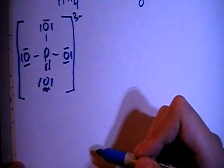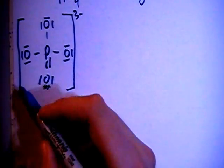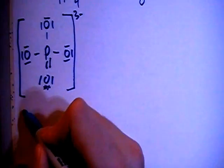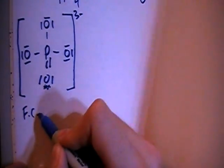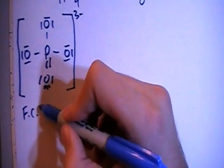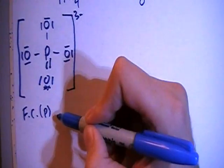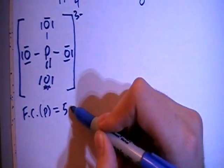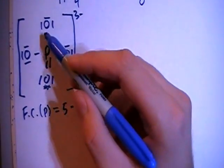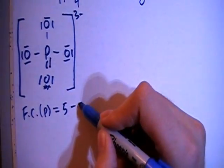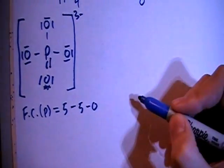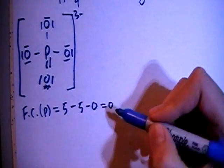Now let's go ahead and check the formal charges now. The formal charge on the phosphorus is going to be 5 valence brought in minus 5 bonds minus 0 non-bonding electrons for a formal charge of 0.